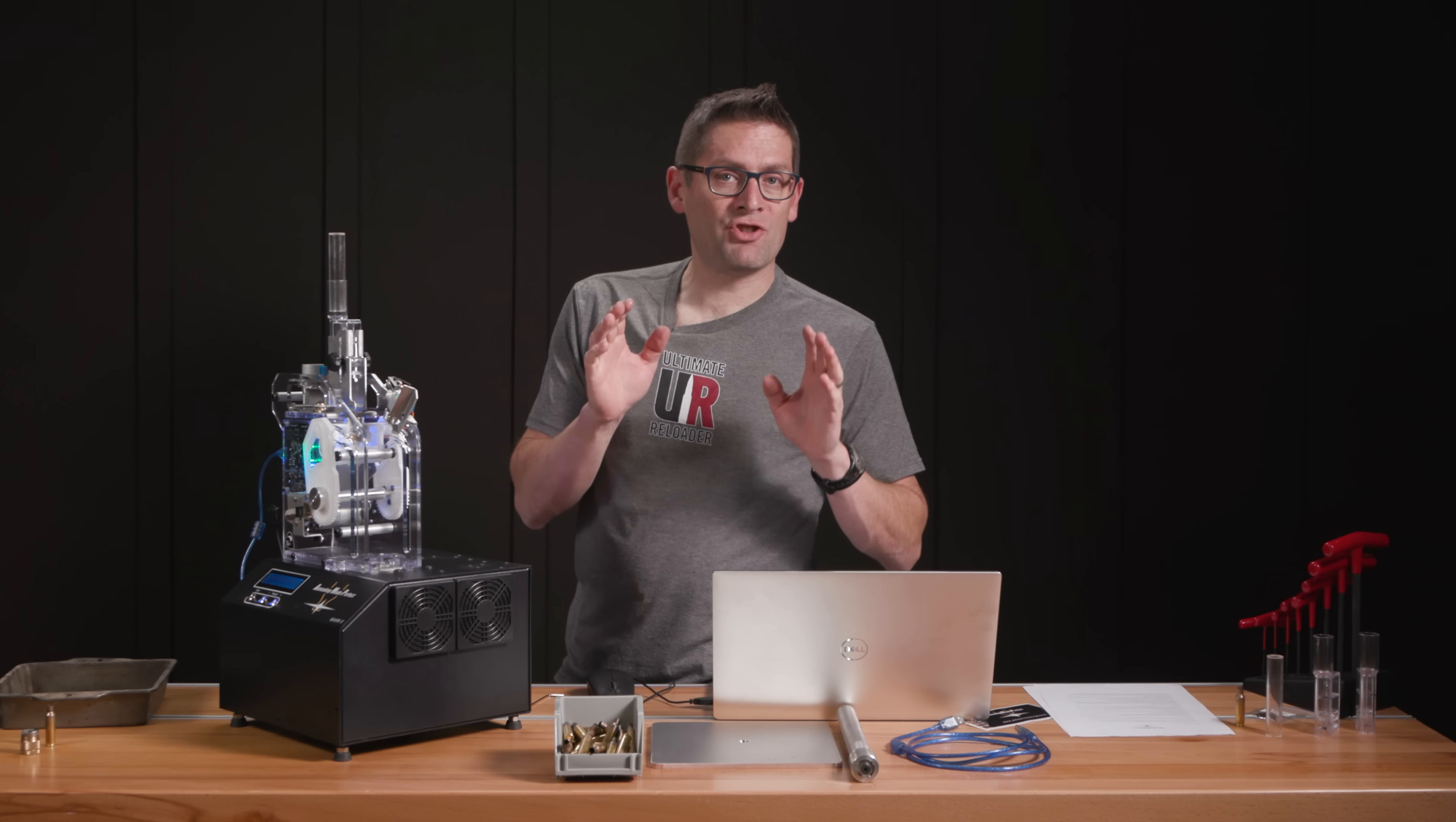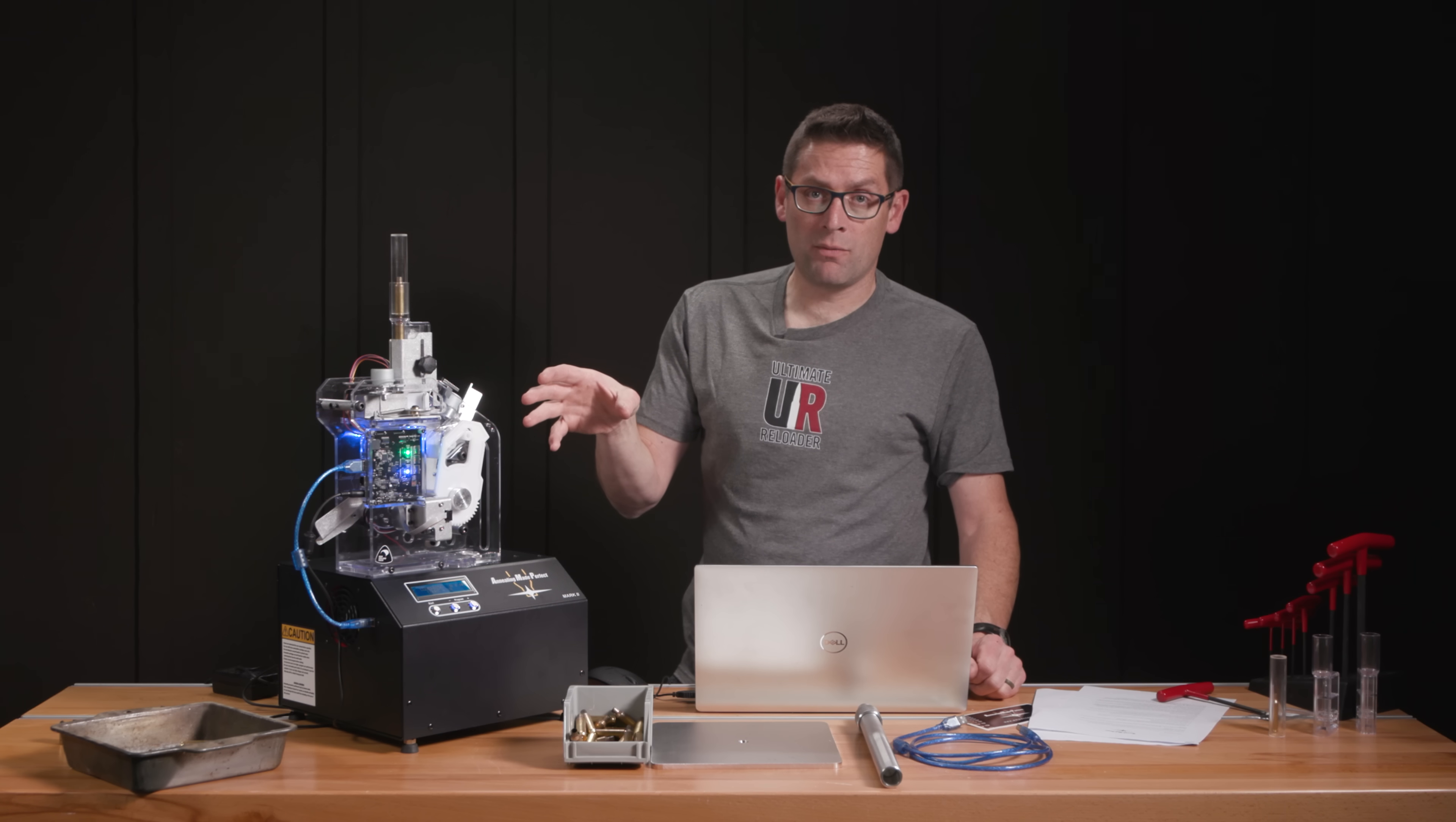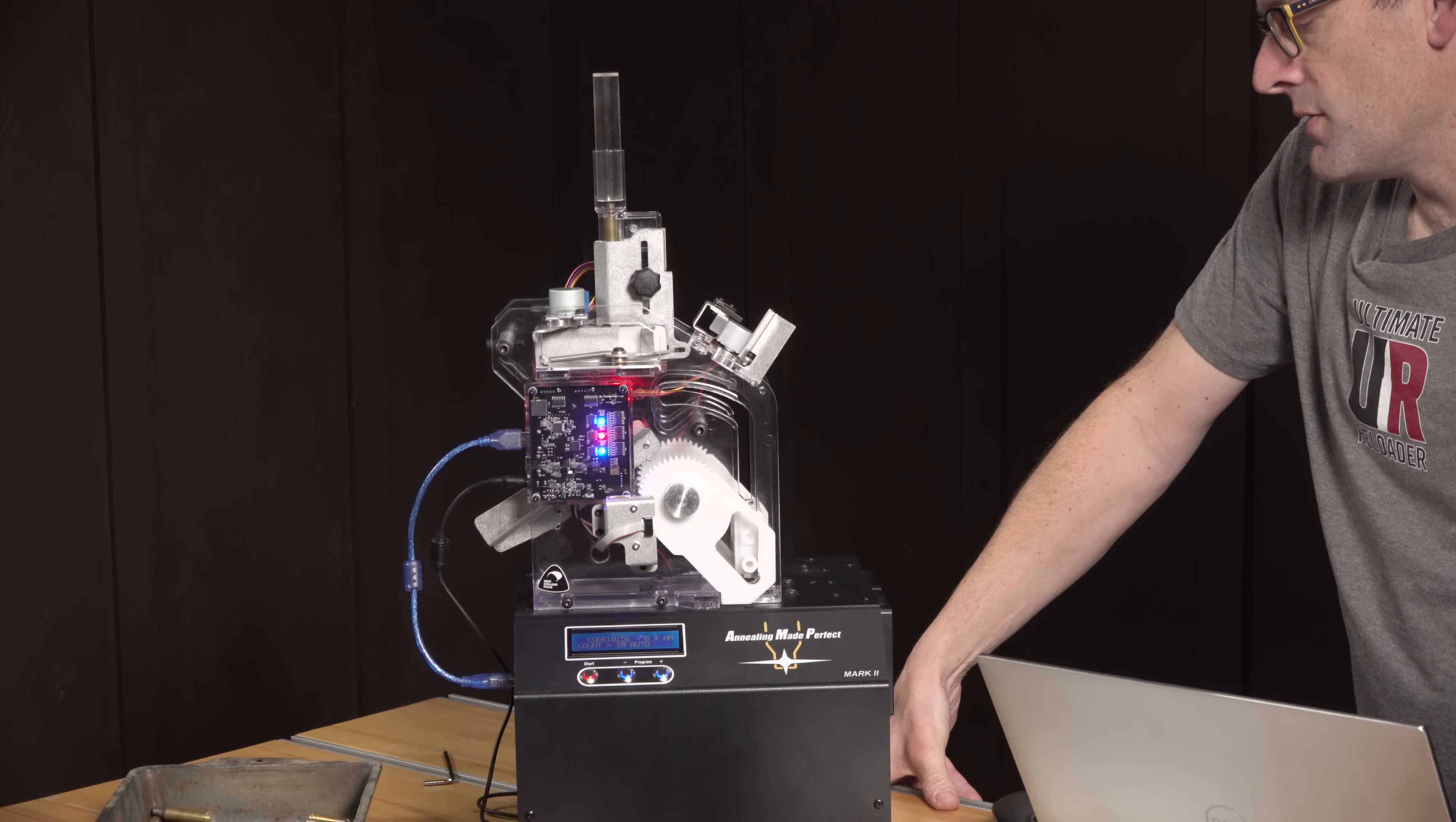So now that we've set up the shell holder, we can install the appropriate pilot, which for us is number 17. With the proper pilot installed and all of our adjustments made, we're ready to test feed a couple of cases through the AmpMate prior to getting our case feed system installed. I just went and hit start there, got a case that all looks good so far.